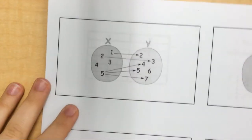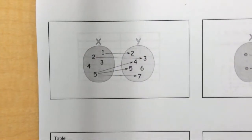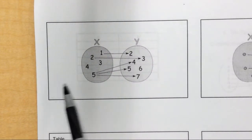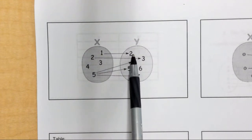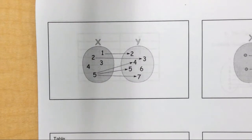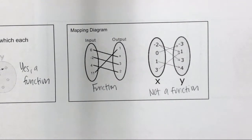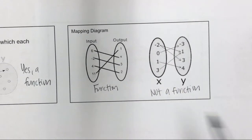Let's look at a couple more mapping diagram examples. Decide yes or no — is this a function? Hopefully you got that it is not a function. The five goes to three different outputs, which is not okay. Also, four and three don't go to anything. What we need is like one and two, where each one goes to exactly one output. In your notes, write an example of a mapping diagram that is a function and one that is not a function.